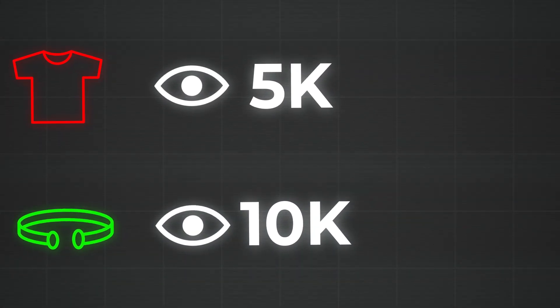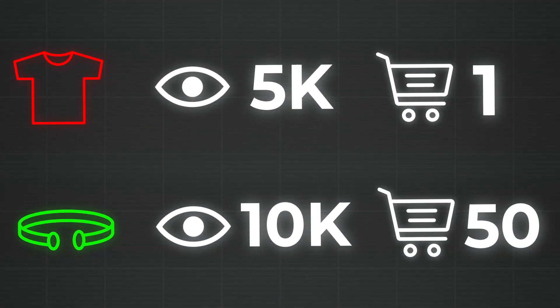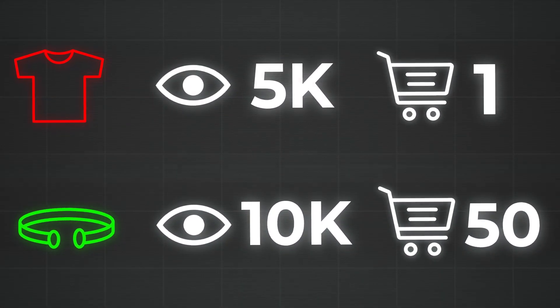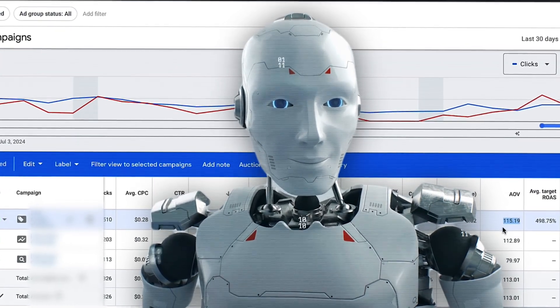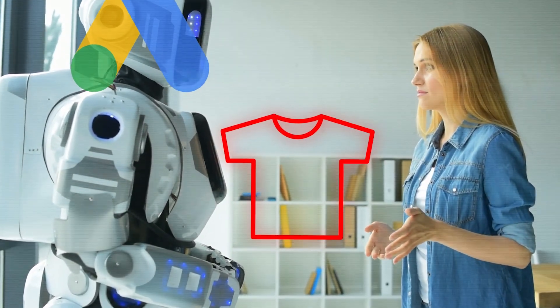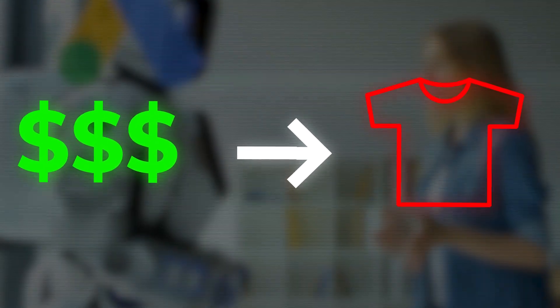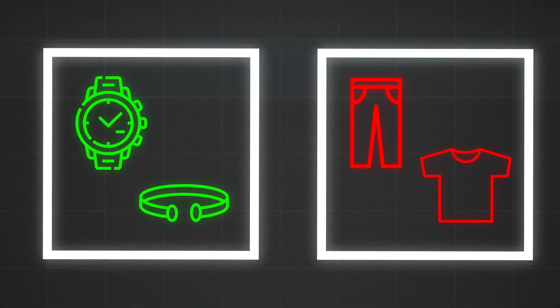Bad products act as parasites within good campaigns. For example, if a bad product gets 5,000 impressions and a good product gets 10,000 impressions, but the good product got you 50 sales while the bad product got you one unprofitable sale — the algorithm is still forcing impressions and ad spend toward the bad product. The algorithm is not a human being; it's a robot. If you don't tell it that a product is bad, it will keep spending money on it, when you'd rather send those impressions to the good product.